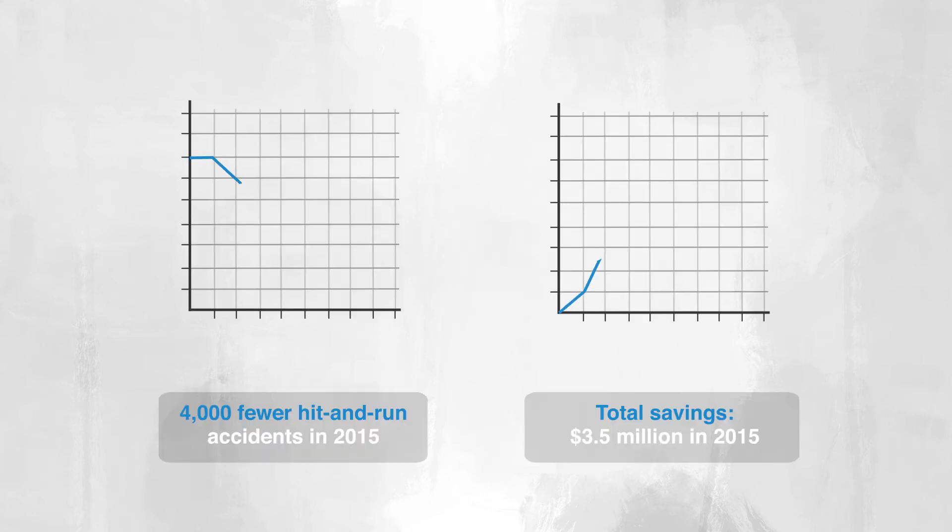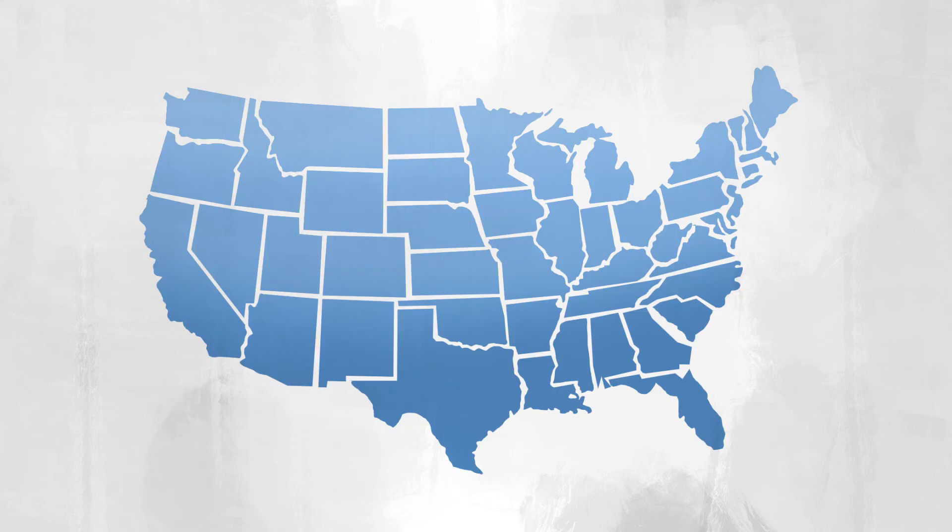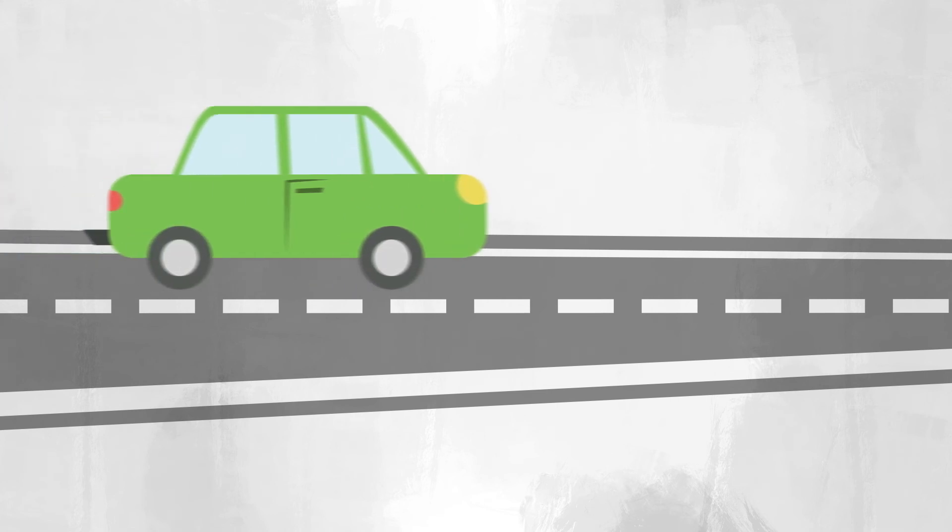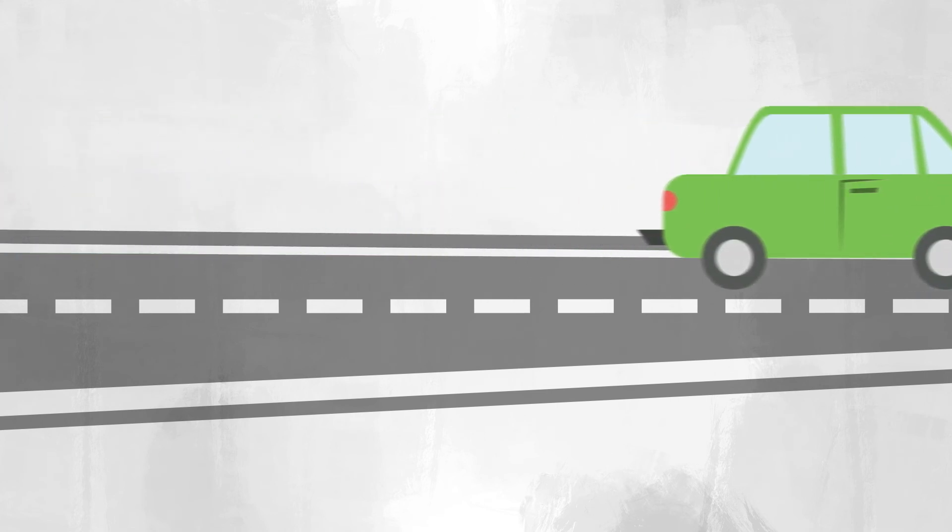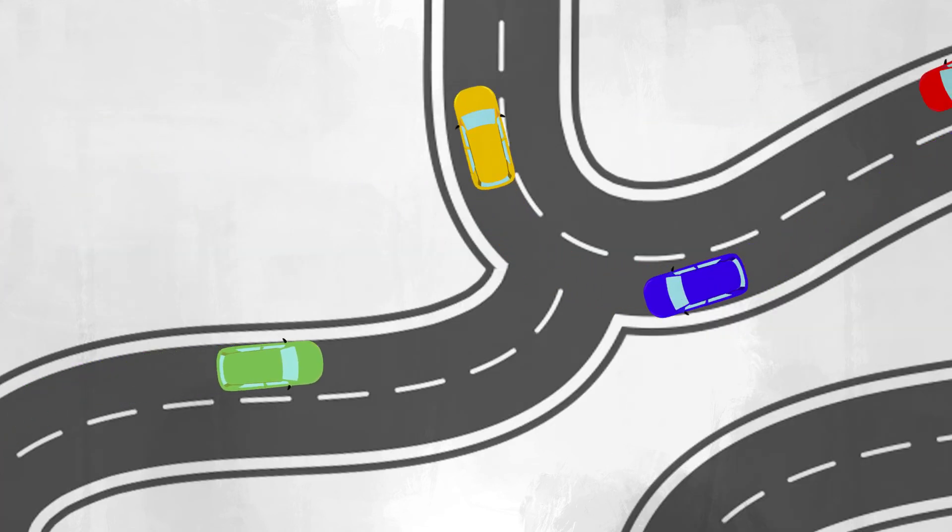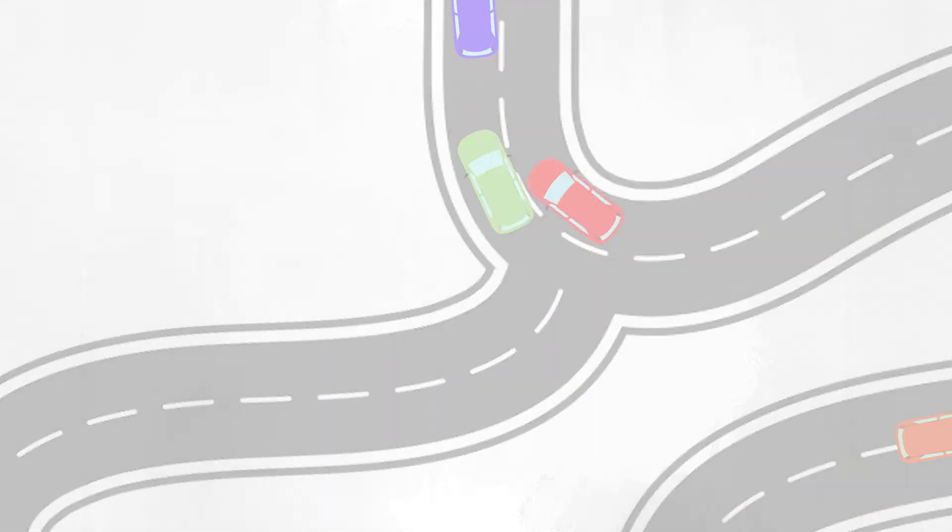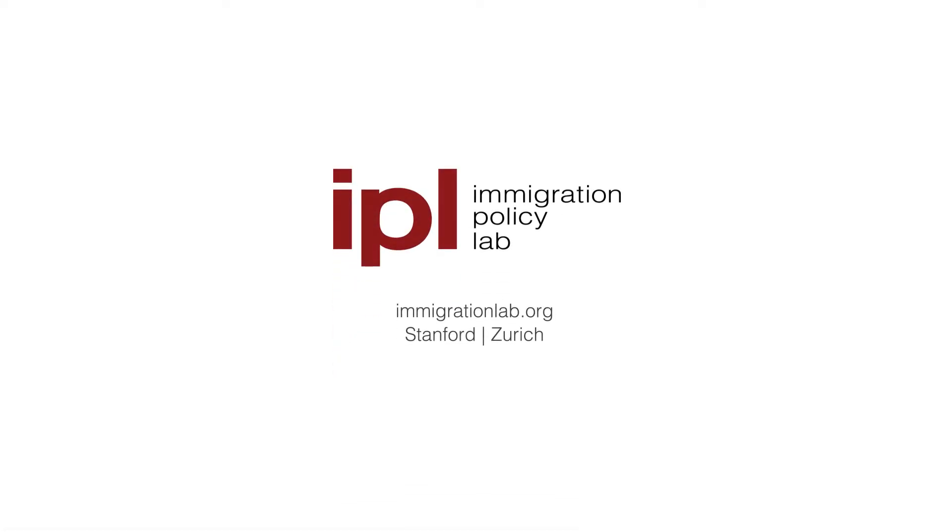By easing immigrants' fears of deportation and vehicle impoundment, California improved traffic safety and saved everyone millions. It's a simple idea with a big payoff, and more states are catching on. Policies that help unauthorized immigrants integrate also benefit the communities they live in.